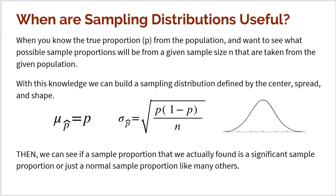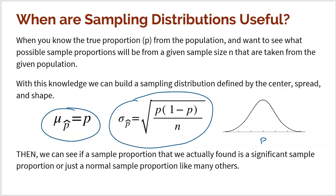Let's relate this back to sampling distributions. When are sampling distributions useful? When you know the true proportion P from the population and want to see what possible proportions will be from a given sample size N taken from that population. We know the true proportion, but we also know that samples vary — a sample is not always going to match up with that true population proportion. The sampling distribution shows us what they all look like, and the mean of all possible sample proportions equals the true proportion, right in the middle, while the standard deviation accounts for natural variation above or below.